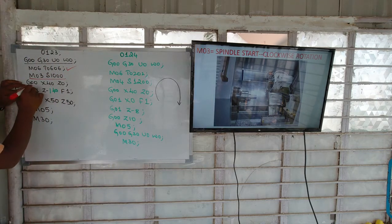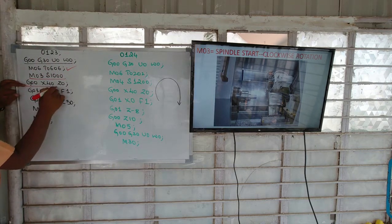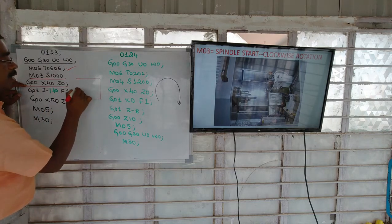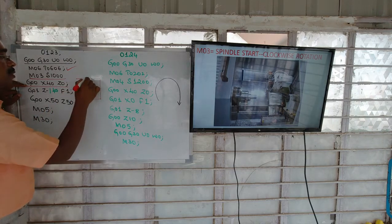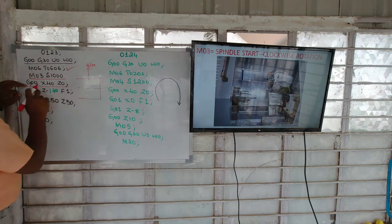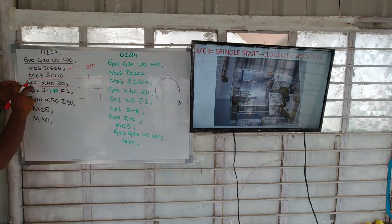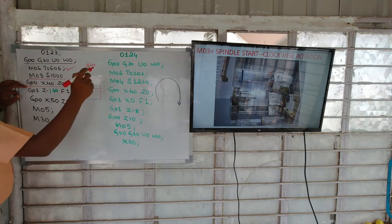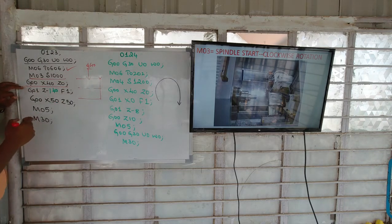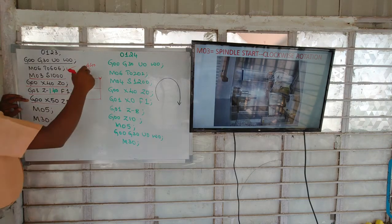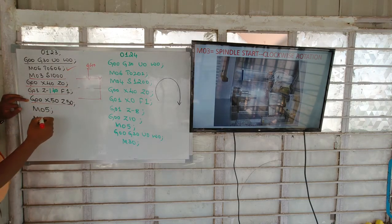And then, when the controller reads the next block, the cutting tool will move to the face of the workpiece. Assume this is a 40mm diameter workpiece. As soon as the controller reads this block, the cutting tool will move from its home position to the workpiece, and then the plane turning operation will take place. After that, it will go back to its safety position.